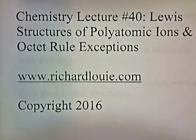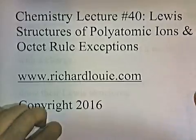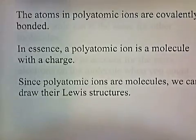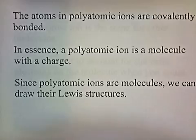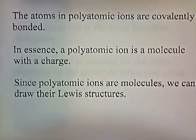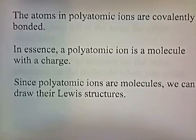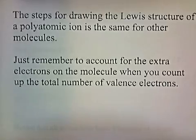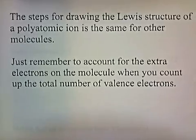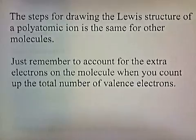Chemistry Lecture Number 40: Lewis Structures of Polyatomic Ions and Octet Rule Exceptions. The atoms in polyatomic ions are covalently bonded. In essence, a polyatomic ion is a molecule with a charge. And since polyatomic ions are molecules, we can draw their Lewis structures. The steps for drawing the Lewis structure of a polyatomic ion are the same as for other molecules — just remember to account for the extra electrons when you count up the total number of valence electrons.